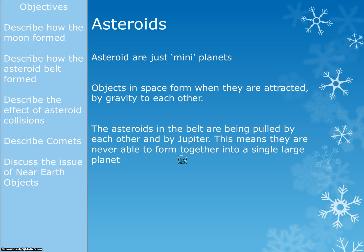The asteroids, if there were no other planets around, would all attract together and we'd end up with a planet or a couple of planets. But they're also attracted to nearby planets — Jupiter and Mars — as well as to each other. Because of these competing attractions and Jupiter's orbit around them, they never form together into anything. They just always float around separately because they're being pulled in different directions all the time. That's why we have the asteroid belt formed the way it has.